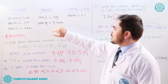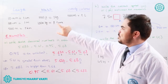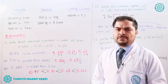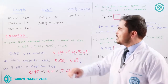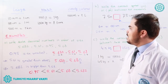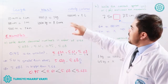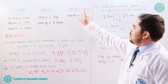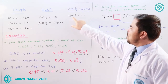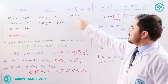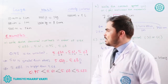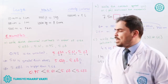For mass, one thousand grams is equal to one kilogram, and one thousand kilograms is equal to one tonne — that is the metric system spelling. For volume or capacity, one thousand milliliters are equal to one liter.